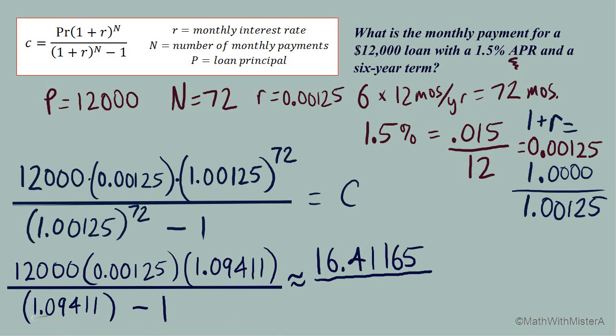And in the denominator we just have this 1.09411 subtract 1 so that's just going to take us down to 0.09411 and now we're ready for this last step to divide it out.